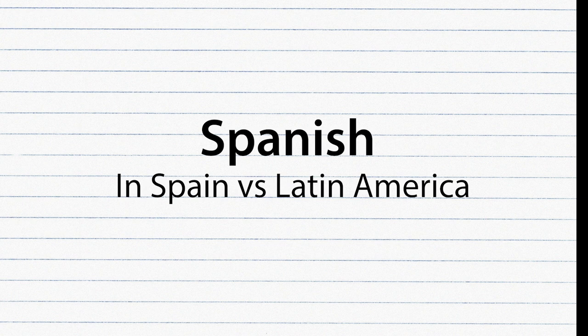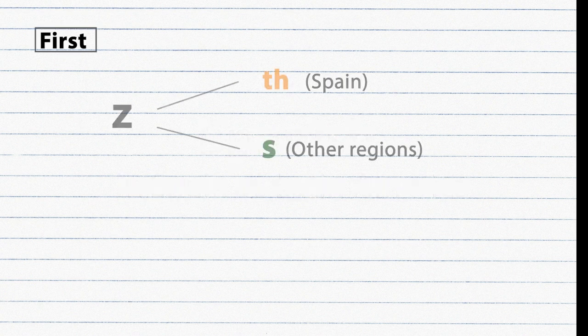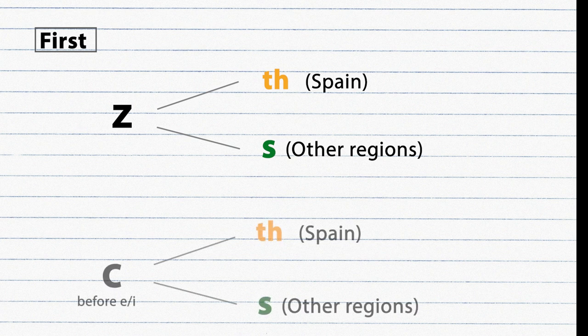There are two main differences between Spanish in Spain and Spanish in Latin America. First, in Spain the letter Z is pronounced as TH, as in the English word 'thing,' but in all other regions it is pronounced as S. Also in Spain, the letter C before E or I is pronounced as TH, but in all other regions it is pronounced as S.